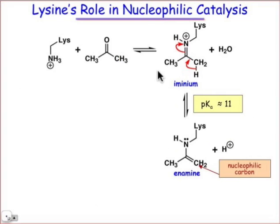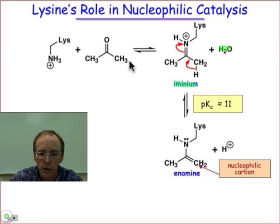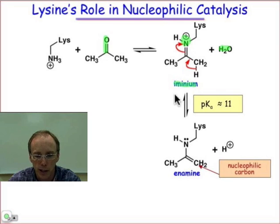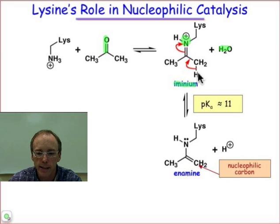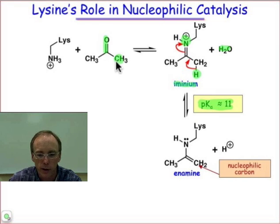Here we see the formation of the iminium ion. The iminium ion is formed with the loss of water. It is a better electron sink than the original carbonyl because of the protonated nitrogen atom. What that does is it enhances the acidity of this hydrogen, which is now recognized as being much more acidic than the original α-carbon of the acetone molecule.